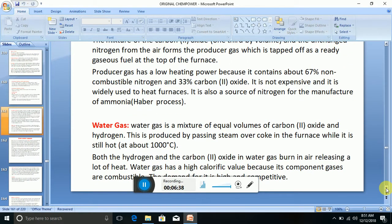Now, water gas is a mixture of equal volumes of carbon 2 oxide and hydrogen. This is produced by passing steam over coke in the furnace while it is still hot, at about 1000 degrees Celsius.